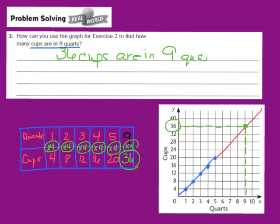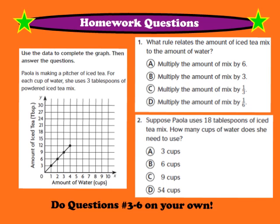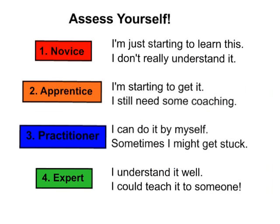We've now found the answer to our question. Your homework for tonight will be to complete question number 1 and question number 2, as well as numbers 3 through 6, in your GoMath workbook on page 196. Somewhere on your homework page, assess yourself: do you feel like you're a 1 — novice, a 2 — apprentice, a 3 — practitioner, or a 4 — expert?